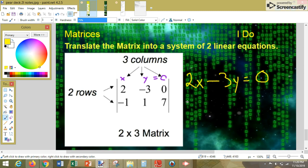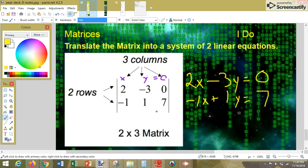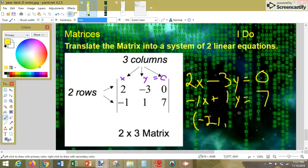And then the second equation, we have negative 1x plus 1y equals 7. And if you're interested in figuring out what the solution is, the solution is negative 21 comma negative 14. So, x equals negative 21 and y equals negative 14.